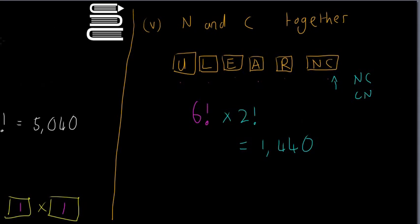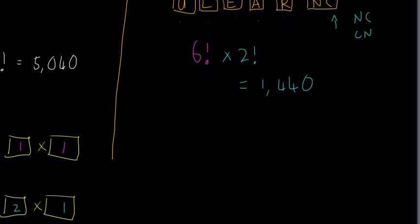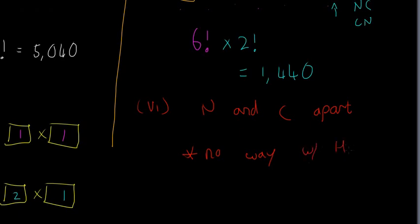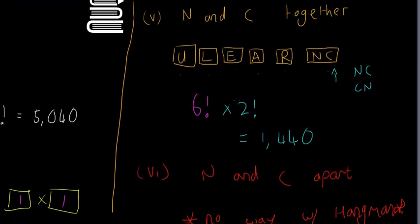The last part is probably the most difficult one — part six: N and C apart. The trick here is that there's no direct way of doing this with the box method. It's really difficult to use the box method to directly count arrangements where N and C are kept apart.